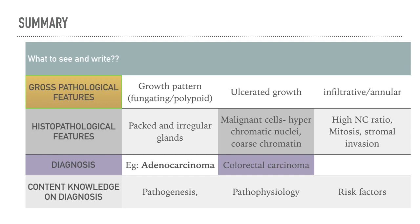To summarize what to look for when you have colorectal cancer: first, describe the gross pathological features and the tumor growth pattern — whether it is fungating, polypoid, ulcerated, infiltrative, or annular. Second, describe the histopathological features: closely packed irregular glands with malignant cells characterized by hyperchromatic nuclei, coarse chromatin, irregular nuclear membrane, high nuclear-to-cytoplasmic ratio, numerous mitoses, and stromal invasion.